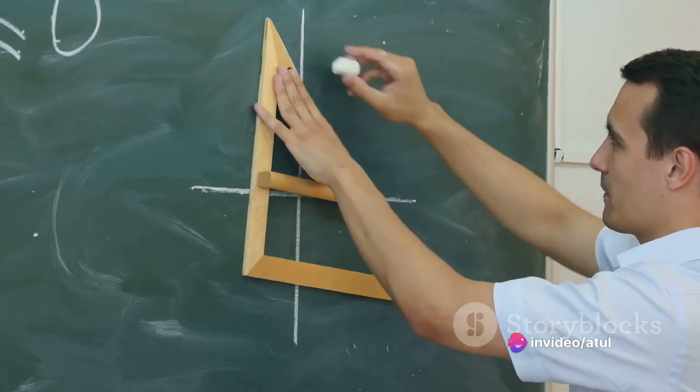To find the line of best fit, we aim to minimize the sum of the squares of these errors. This method is known as least squares.